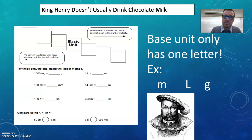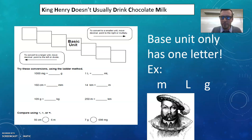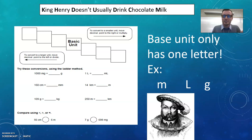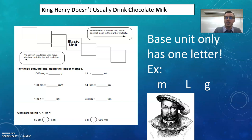The metric system is very convenient because it's all set up in factors of 10. How many feet are in a yard? Three. That's random. How many yards are in a mile? You've got to look it up every time. The metric system is everything in 10s. Like, how many teaspoons are in tablespoons? These things don't make any sense. They all have interesting stories, but the metric system is all in units of 10.